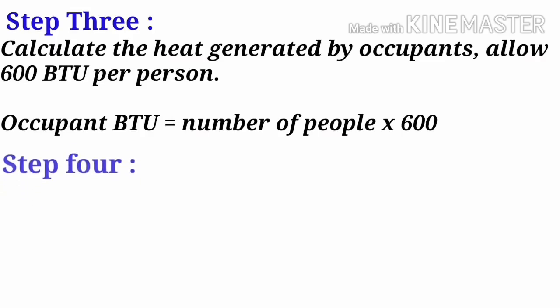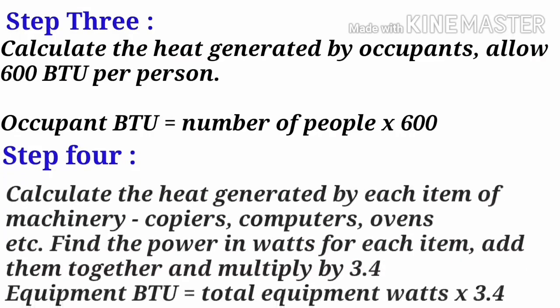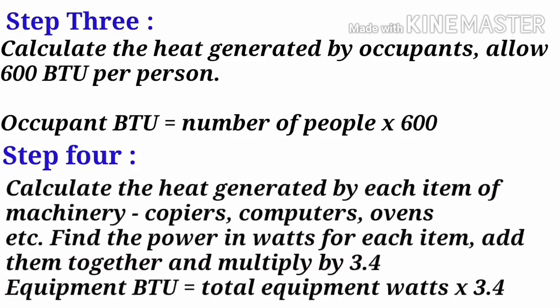Step 4: Calculate the heat generated by each item of machinery — copiers, computers, ovens, etc. Find the power in watts for each item, add them together and multiply by 3.4. Equipment (BTU) equals total equipment watts multiplied by 3.4.